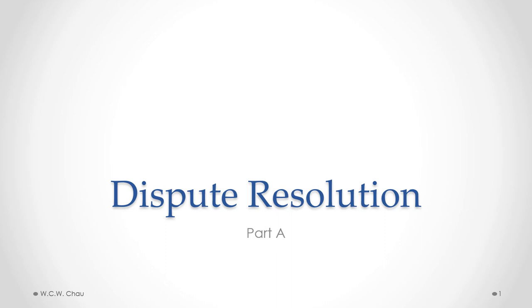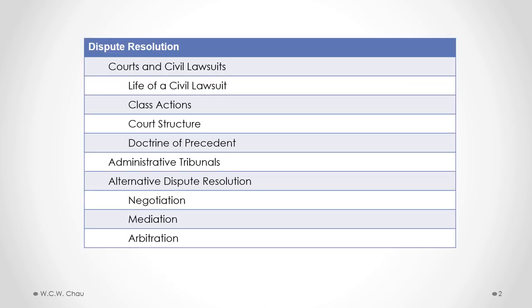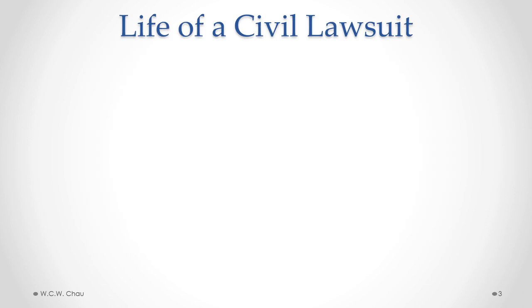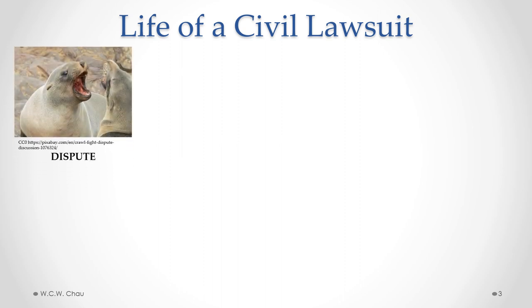This is Waylon Chow, and welcome to Dispute Resolution, Part A. In this part, we will look at the courts and civil lawsuits. Let's look at the life of a civil lawsuit from beginning to end. A civil lawsuit involves one private person or business suing another private person or business. That's in contrast to a criminal lawsuit where the government — which in Canada we call the Crown — accuses a person of having committed a criminal offense. So with a civil lawsuit, we always start with some kind of dispute between two or more parties.